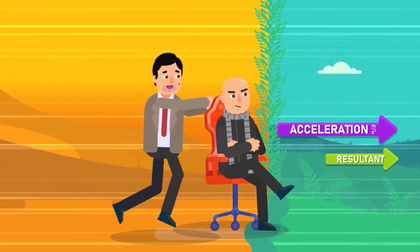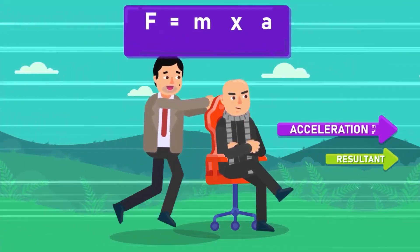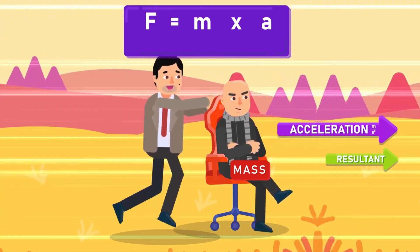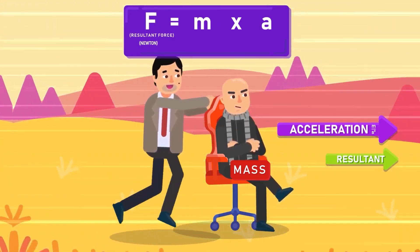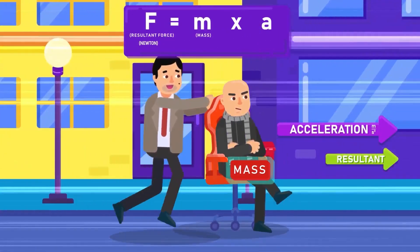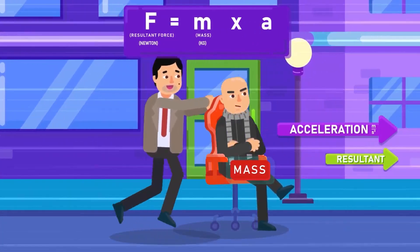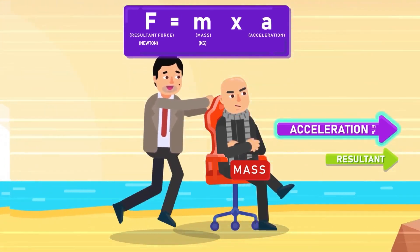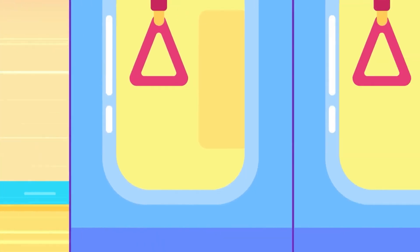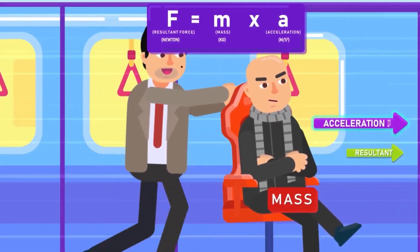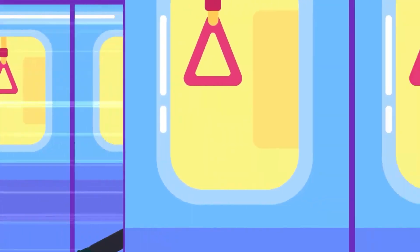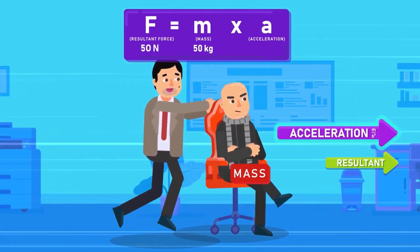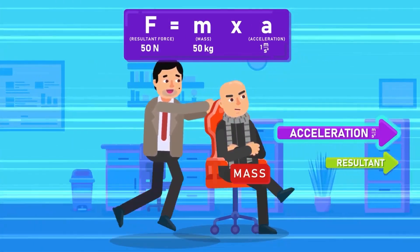Newton's second law of motion describes the relationship between them: the resultant force, or F in Newtons, is equal to the mass, or m in kilograms, times the acceleration of an object, or A, in metres per second squared. From this law, we can infer that a resultant force on an object produces an acceleration.